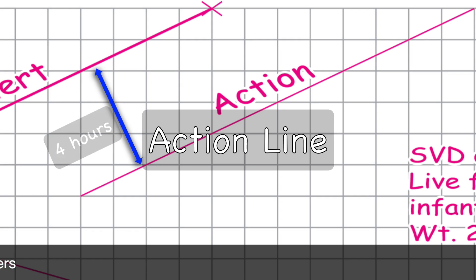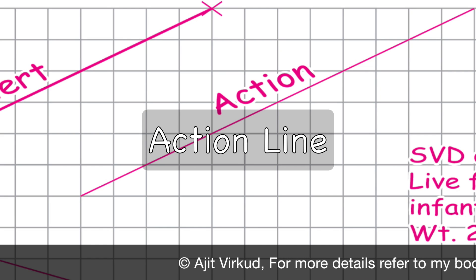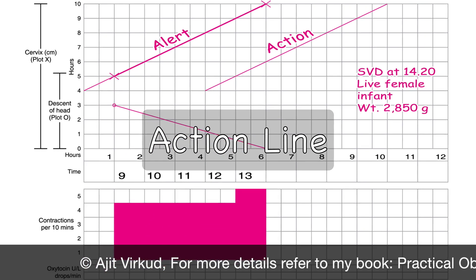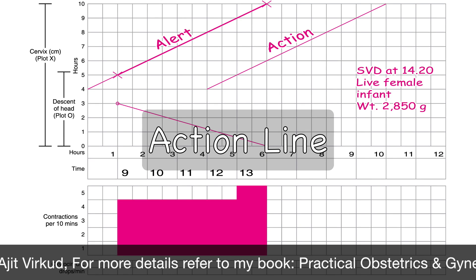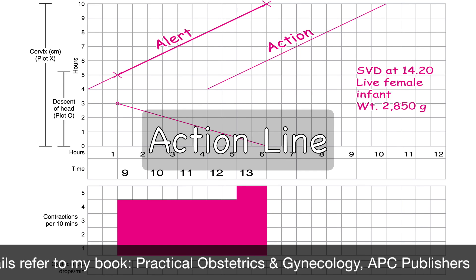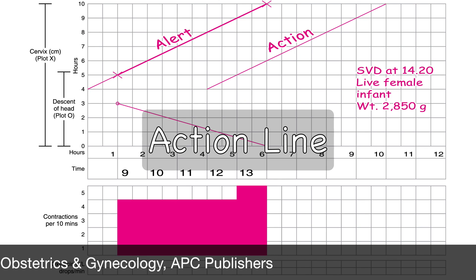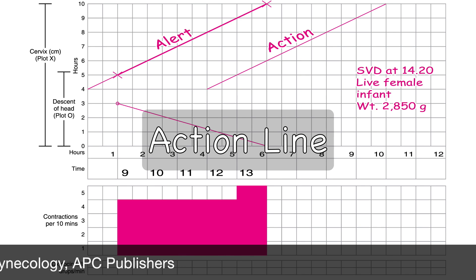The action line is parallel and 4 hours to the right of the alert line. If labour is not following the expected course, the plot will begin to approach the action line, signalling the need to make management decisions — that is, critical assessment of the cause of delay and appropriate action such as caesarean section in a tertiary care hospital. The action line is also referred to as the hospital line because by the time labour progress retards to this stage, the woman must receive appropriate management in a tertiary care hospital.